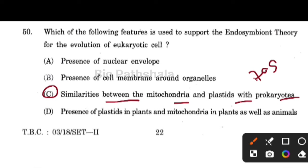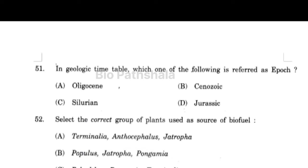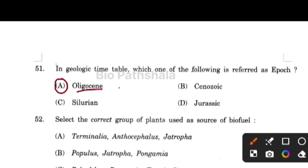Next question: in the geological time scale, which one of the following is referred to as an epoch? Oligocene is referred to as an epoch. Cenozoic is your era, and Jurassic and Silurian are periods.